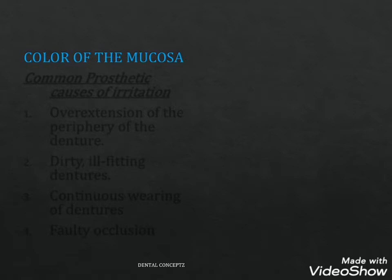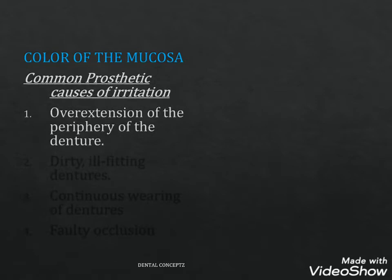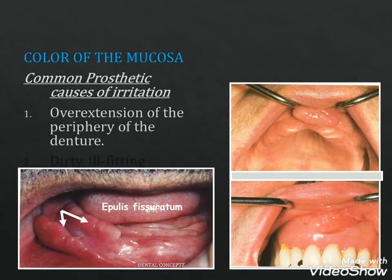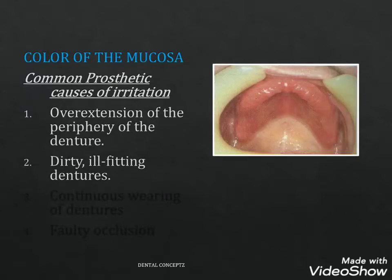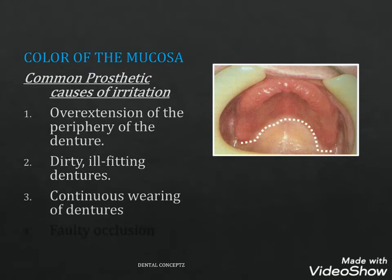The normal and healthy mucosa is pink in color and in case of inflammation it appears red. Common prosthetic causes of irritation include overextension of the periphery of the denture, which results in hyperplasia of denture border tissues — a condition known as epulis fissuratum. Dirty ill-fitting dentures cause inflammation of the underlying mucous membrane, and continuous wearing of dentures and faulty occlusion also results in inflammation and hyperplasia of the denture bearing area.